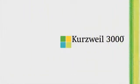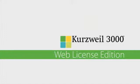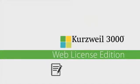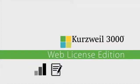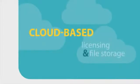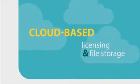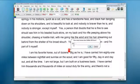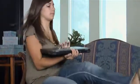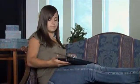Kurzweil 3000 version 12 for Windows Web License Edition addresses the challenges of administering coursework, monitoring individual student progress, and storing and sharing files. By using cloud-based licensing and file storage services, the Web License Edition gives teachers the ability to efficiently assign reading, writing, and related academic work. Students can work within their own customized user interface and complete assignments from the comfort of any location they choose.